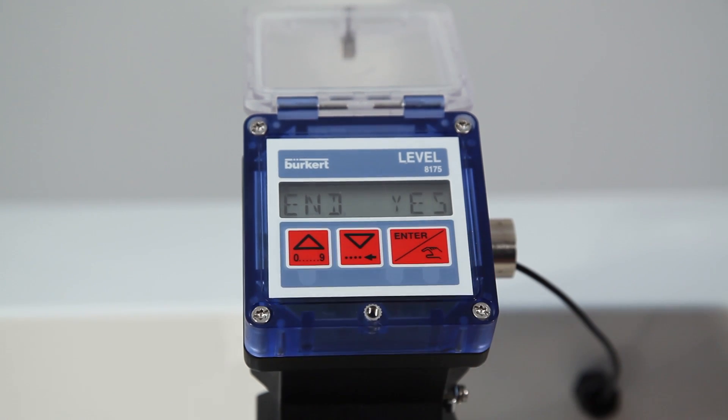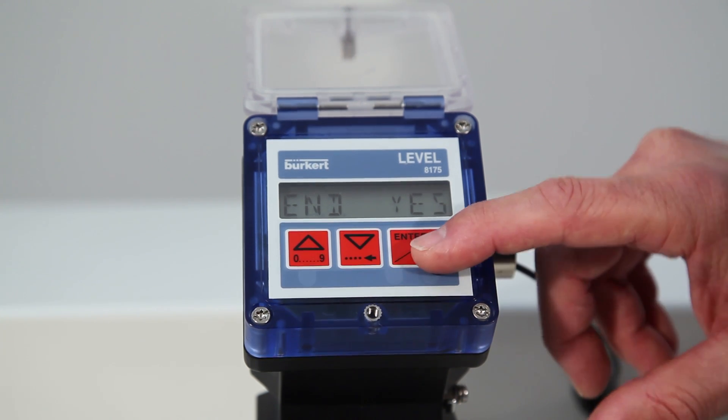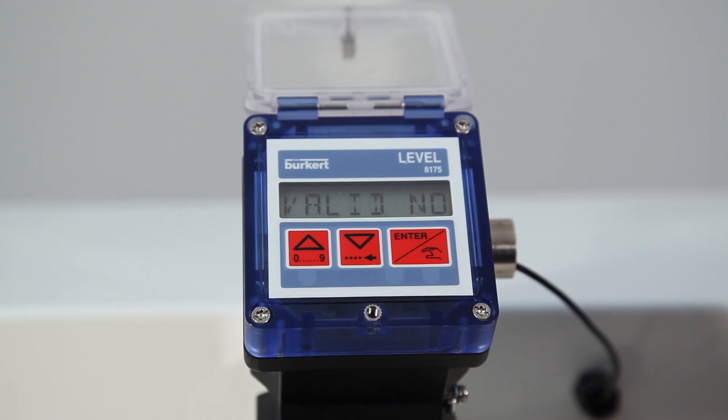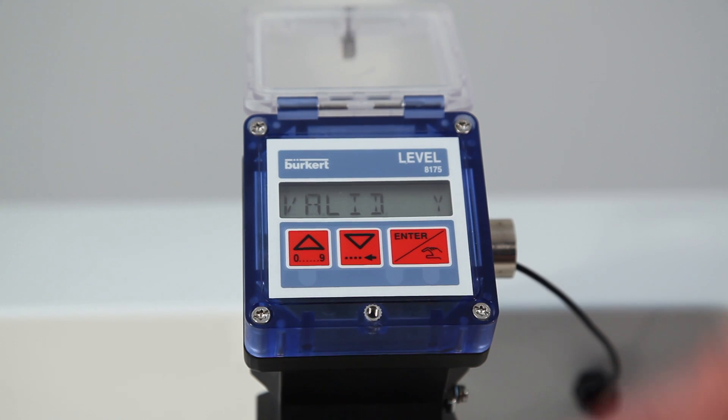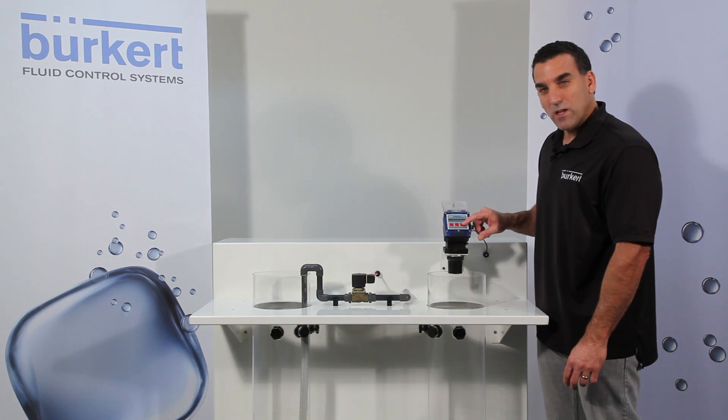By use of the arrow key, we change the N NO to N YES and hit enter. Then valid NO does appear. To change this to valid YES, again, we use the arrows. Once valid Y is shown, hit enter.